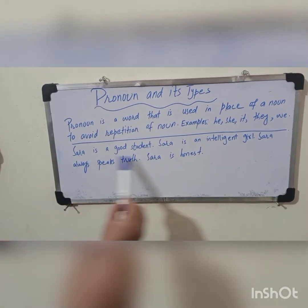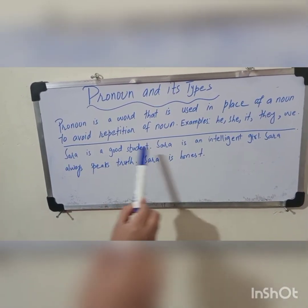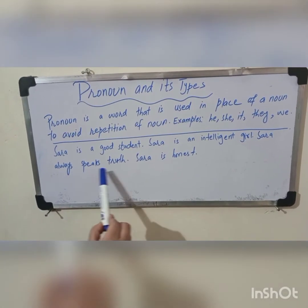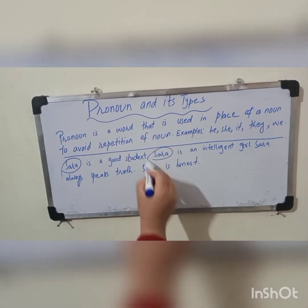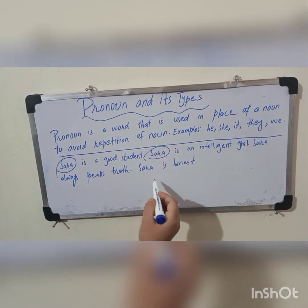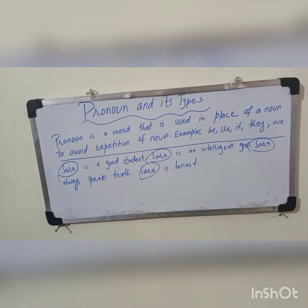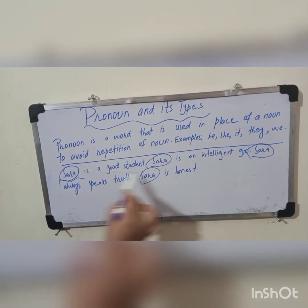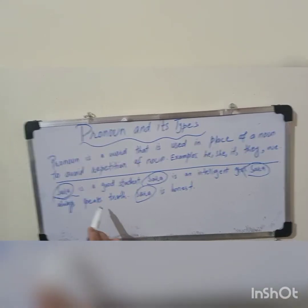اب یہاں پہ دیکھیں، یہ میں نے 3-4 sentences لکھی ہیں: Sara is a good student، Sara is an intelligent girl، Sara always speaks truth، Sara is honest۔ یہاں پہ Sara ایک noun ہے اور ہم نے ہر sentence میں Sara کو 1، 2، 3، 4 بار repeat کیا ہے۔